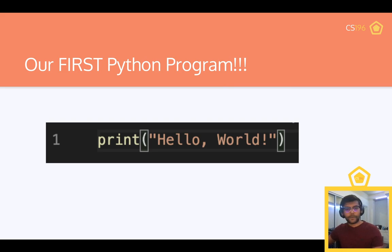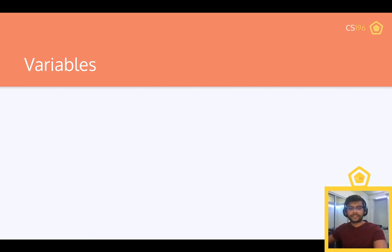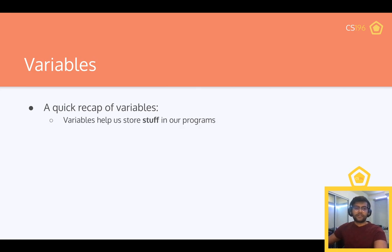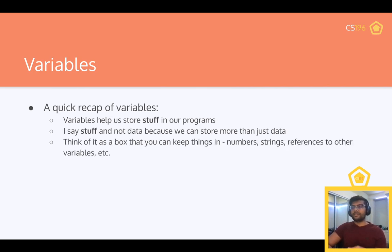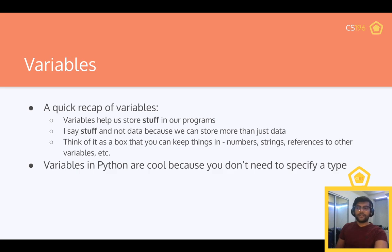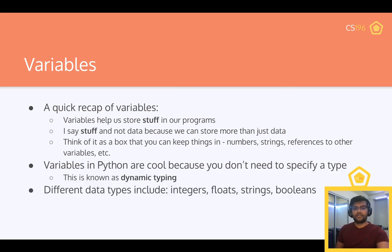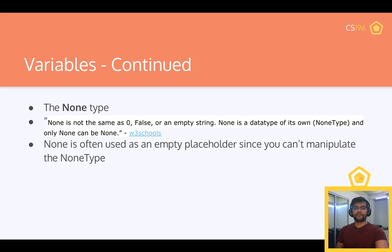Let's cover variables. Variables help us store stuff in our programs — not just data, but also numbers, strings, references to other variables, data structures, objects, or even nothing. In Python, variables are cool because you don't need to specify a type — this is known as dynamic typing. Different data types include integers, floats, strings, and booleans, but you just write 'x equals' whatever and Python figures out the type for you.